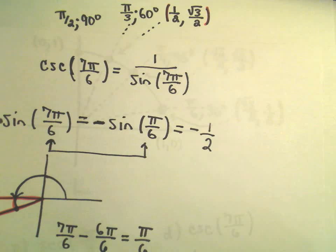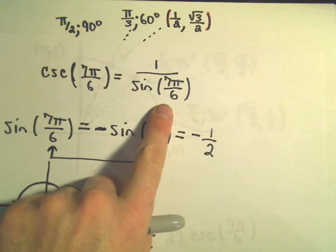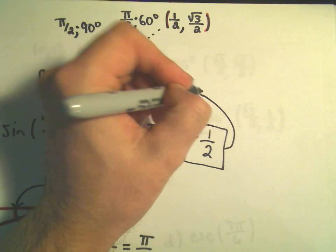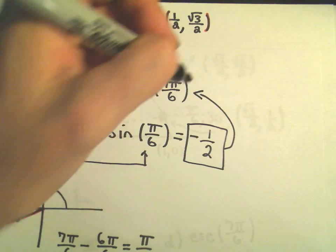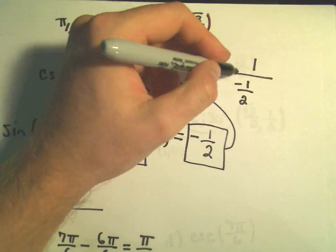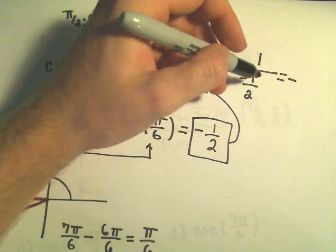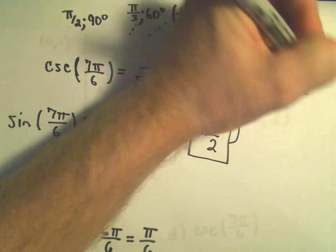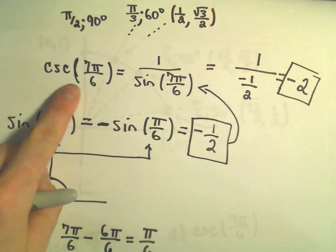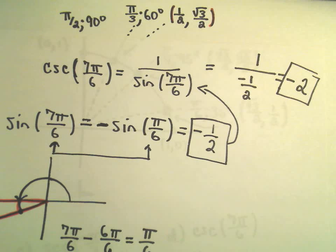Now we have to do the same thing again — we have 1 over sine of 7π over 6, so I'm just going to plug negative 1/2 into the denominator. We'll get 1 over negative 1/2. We've got a positive over a negative, which is a negative. 1 over 1/2 just flips the fraction, which gives us negative 2. So cosecant of 7π over 6 is the same thing as negative 2.